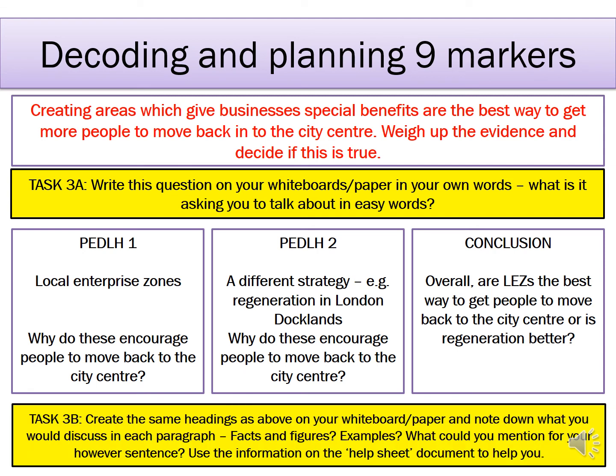The second part of this task is to create the same headings you can see in the three boxes on the slide on your whiteboard and note down what you would discuss in each paragraph. We're not asking you to answer the question, but to create a plan — what facts and figures could you use, what examples could you talk about, what could you mention for your however sentence when trying to give a different opinion. You've got information on the help sheet and the knowledge card to help you, and once you've got your plan take a photo and upload it to Class Charts.